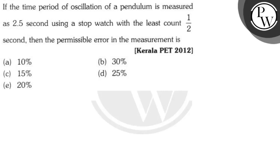Hello, let's see this question. If the time period of oscillation of a pendulum is measured as 2.5 seconds using a stopwatch with a least count of 1 by 2 seconds, then the permissible error in the measurement is: option A, 10 percent; option B, 30 percent; option C, 15 percent; and option D, 25 percent.